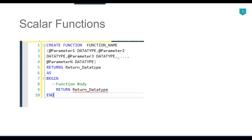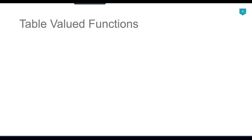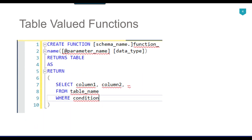The second type of functions are table-valued functions. A table-valued function always returns a table. The syntax is: CREATE FUNCTION, then the schema name and function name, then you provide the parameters with their data types, and then RETURNS TABLE AS RETURN, followed by a SELECT statement that selects data from the SQL Server database.